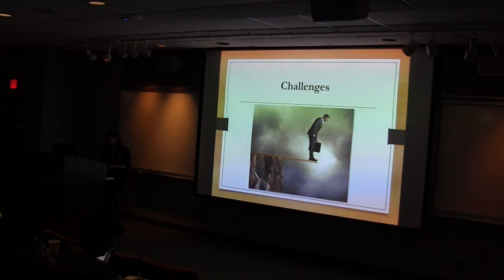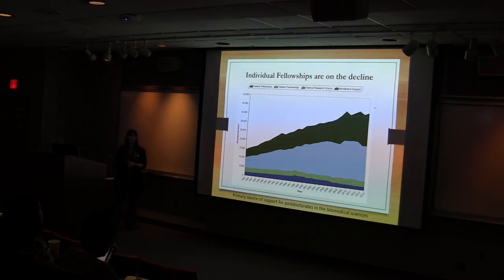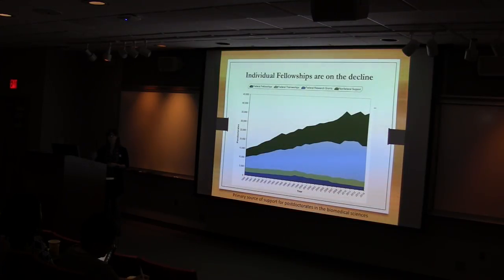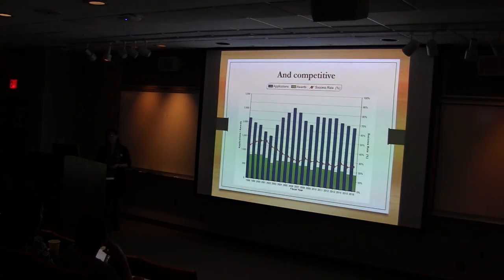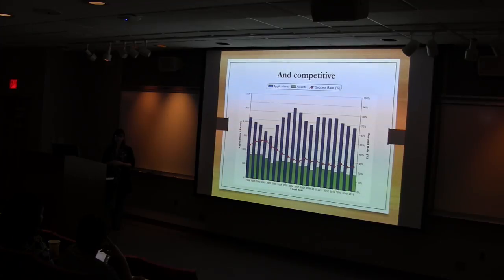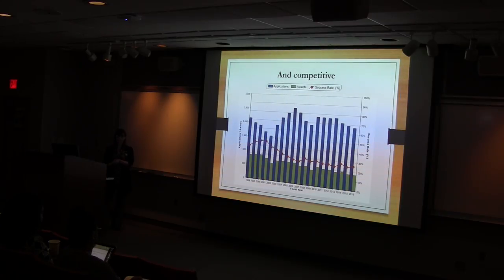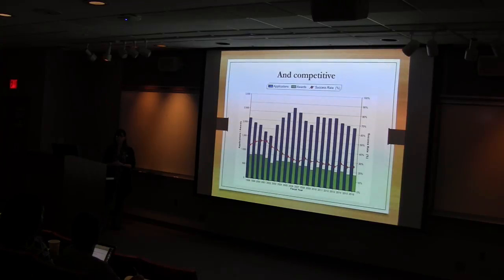What are the challenges? F32 awards are on the decline — a little bit stable but still heading down. The darker blue represents federal fellowships, which is where F32s sit. They're highly competitive, with success rates hovering around 26–27% for a long time. You're putting something on paper to be evaluated alongside many of your colleagues who are also great investigators with great mentors. So how do you set yourself apart from this crowd?